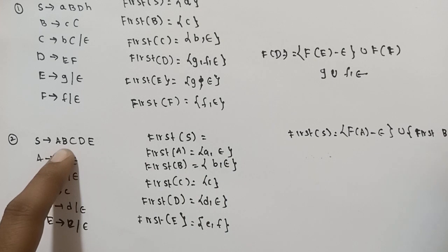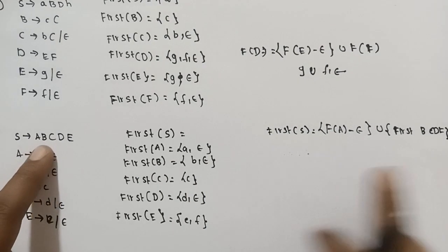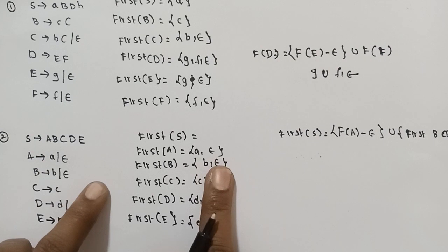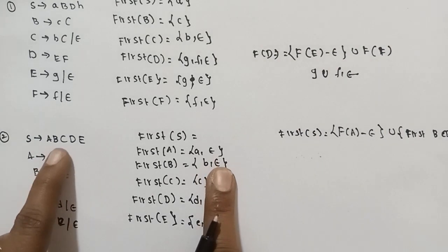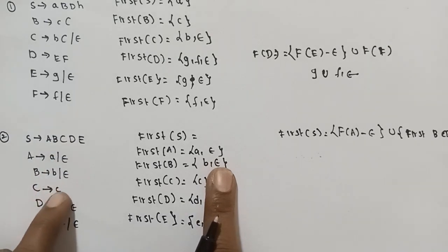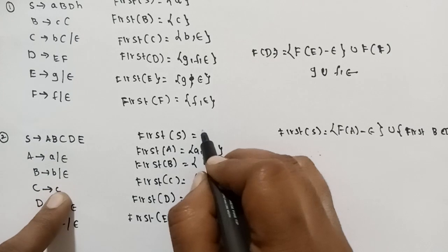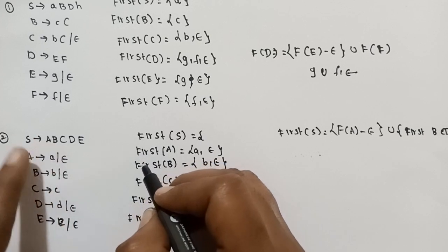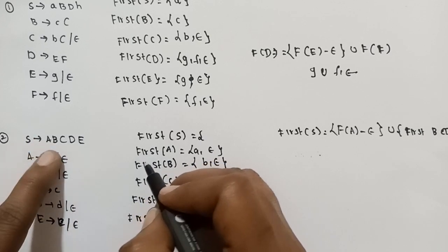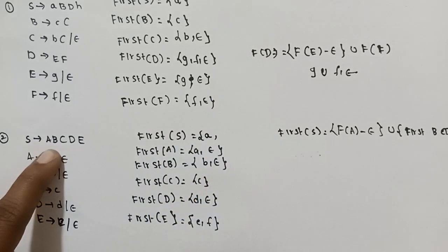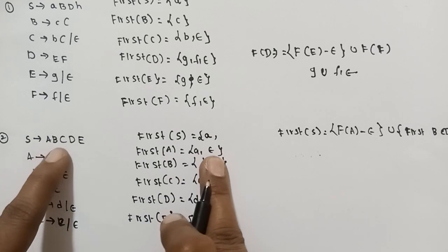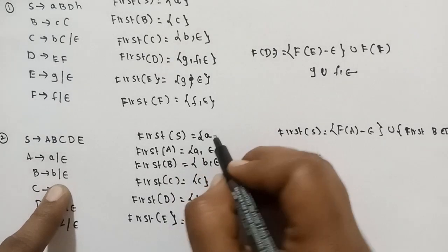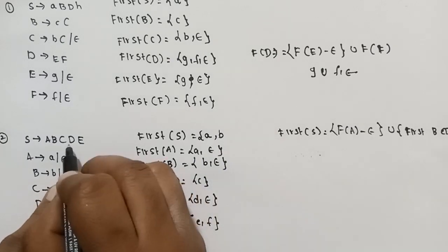So First of B, C, D, E — this is how we calculate. First of E minus epsilon, except epsilon. Next, calculate C. First of S except epsilon — only A. First is A, except epsilon. Next, calculate B: B came in First of B, epsilon below B, except epsilon.